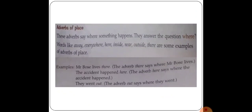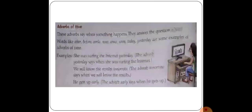Next, adverb of place: these adverbs say where something happens — they answer the question 'where.' Words like away, everywhere, here, near, inside, outside are examples of adverb of place. For example: 'Mr. Bose lives there' — 'there' says where Mr. Bose lives. 'The accident happened here' — 'here' says where the accident happened. 'They went out' — 'out' says where they went.